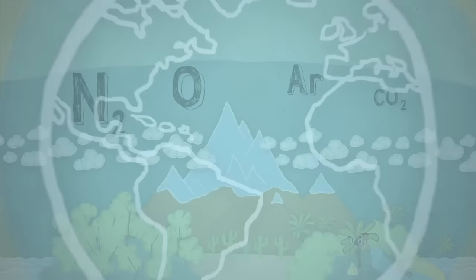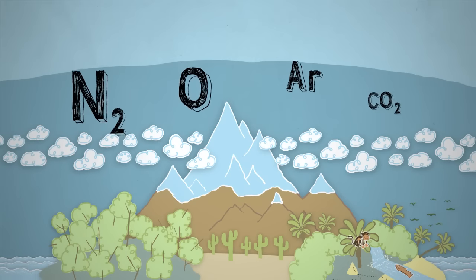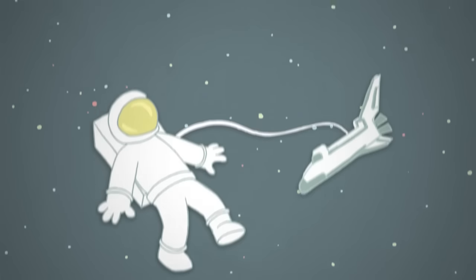One thing that makes life on Earth possible is a thin layer of gases called the atmosphere. It holds in the air we breathe and protects us from the cold of outer space.